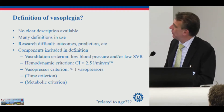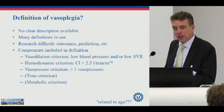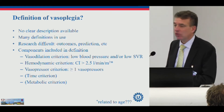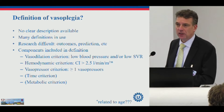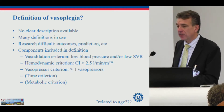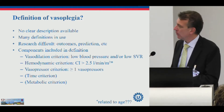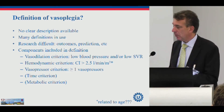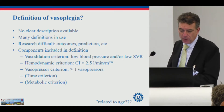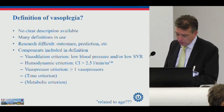What about Vasoplegias? Well, there are no clear descriptions of Vasoplegias available yet. There are many definitions used, and I will come to several factors in the next few minutes. But it makes research difficult — research about risk factors, outcomes, and prediction of Vasoplegias, which is very important. Which patients in our population might develop Vasoplegias after the operation? Can we improve the health status beforehand, and can we think about things we can do intraoperatively? Components included in the definition are vasodilation criteria, a hemodynamic criteria, a vasopressor criteria, and in some definitions a time criteria and a metabolic criteria.